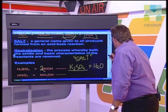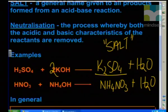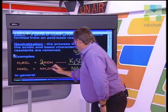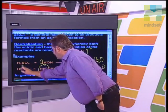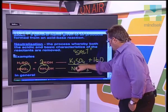Another example: what about nitric acid plus ammonium hydroxide? Well, that will produce ammonium nitrate plus H₂O, and that equation is balanced as it stands. That is another example of a salt. Ammonium nitrate is a salt — it's a product of an acid, with the NO₃ part coming from the acid and the NH₄ part coming from the base.